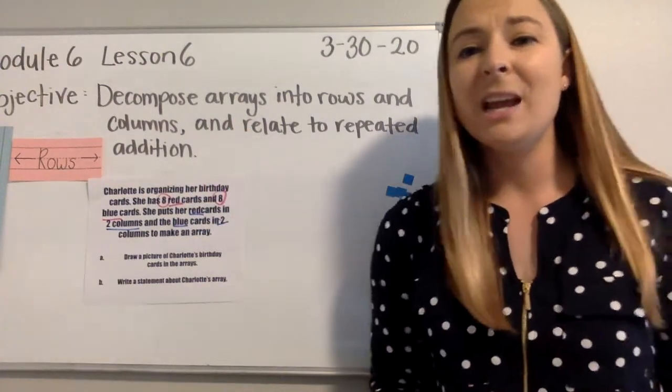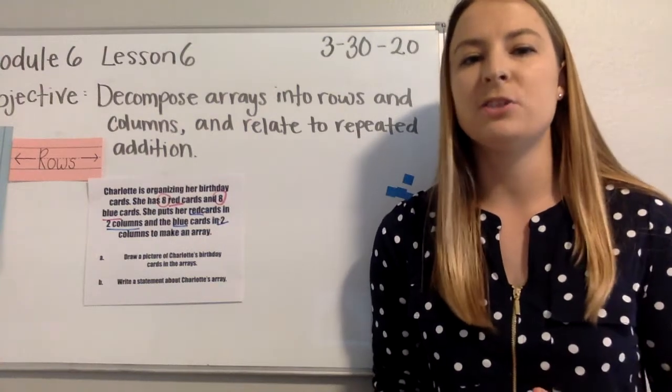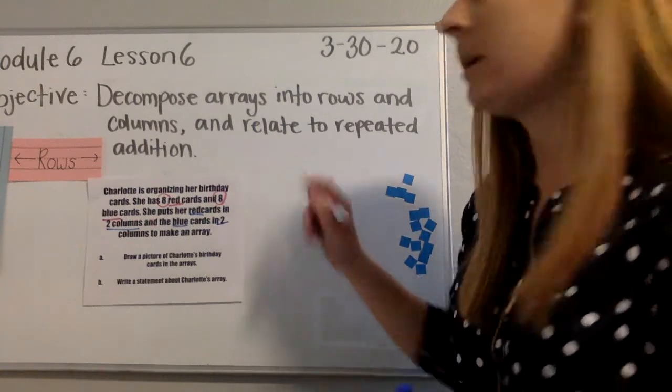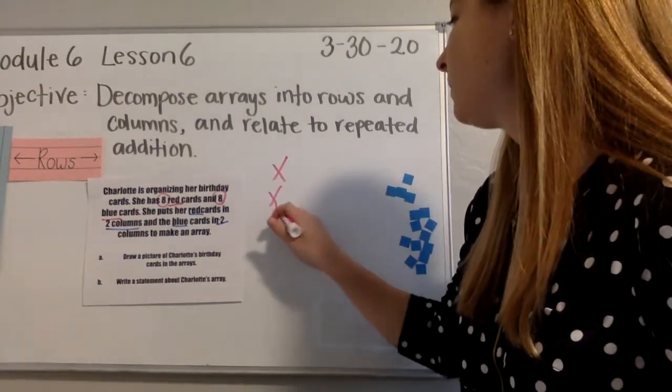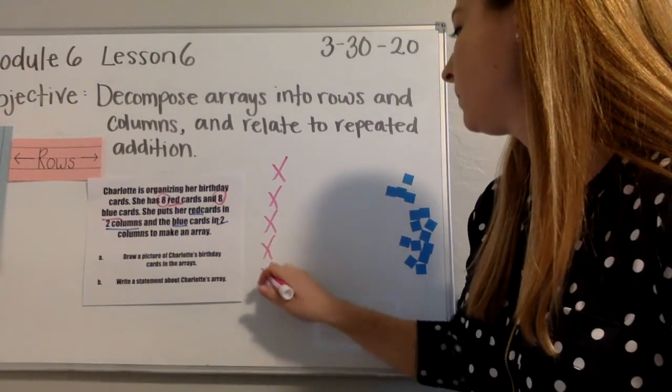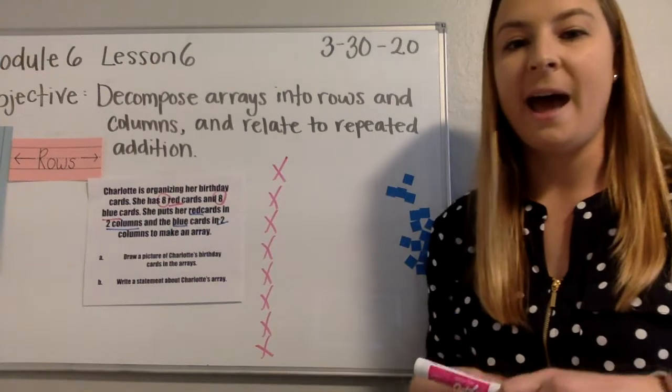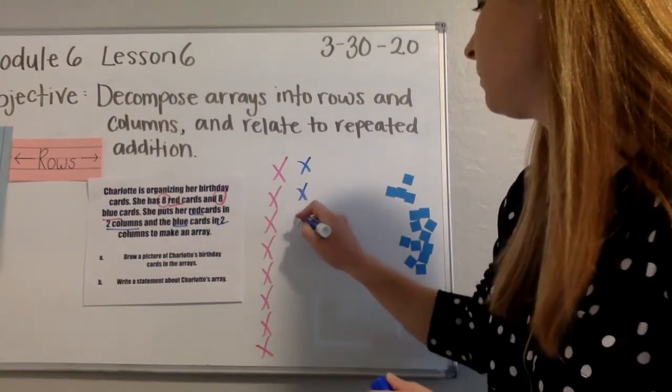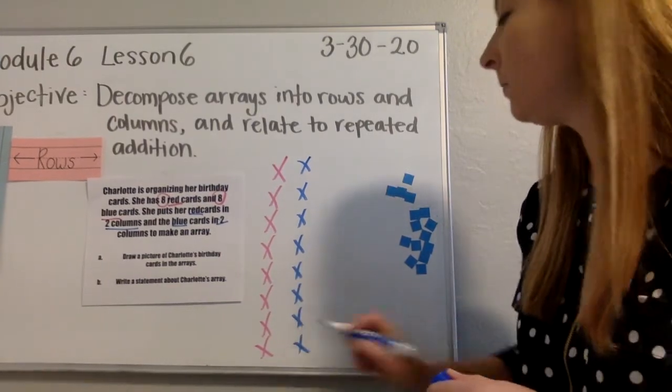Now, before I'm even going to do any sort of math, I want to draw a picture of this just to quickly understand what Charlotte is working with. I know that she has eight red cards. I'm going to use X's to show the cards. And I know that she has eight blue cards.